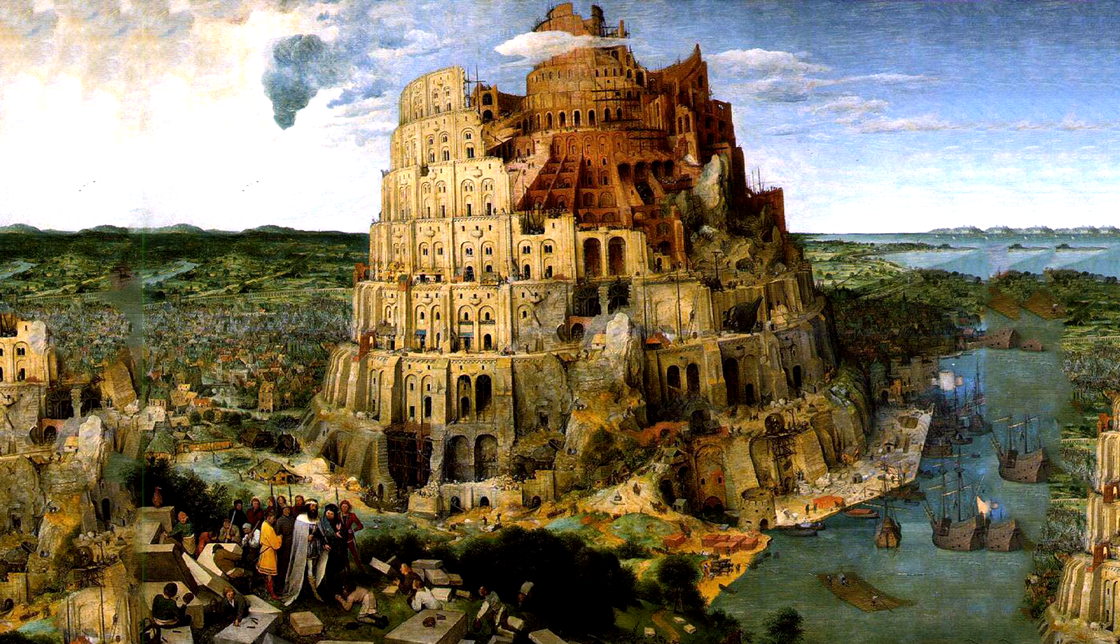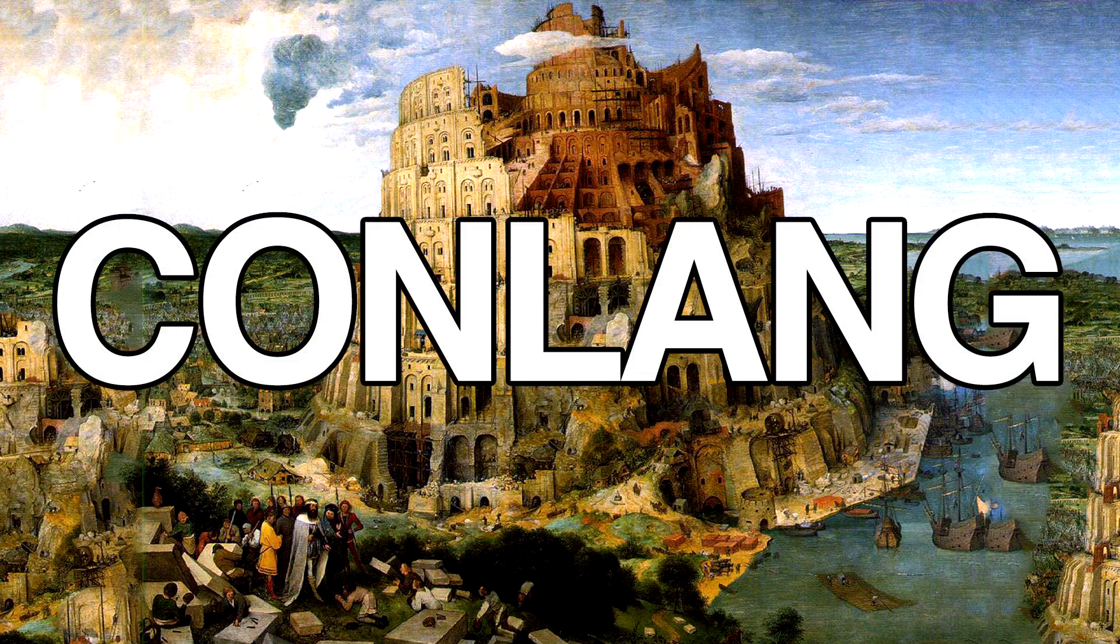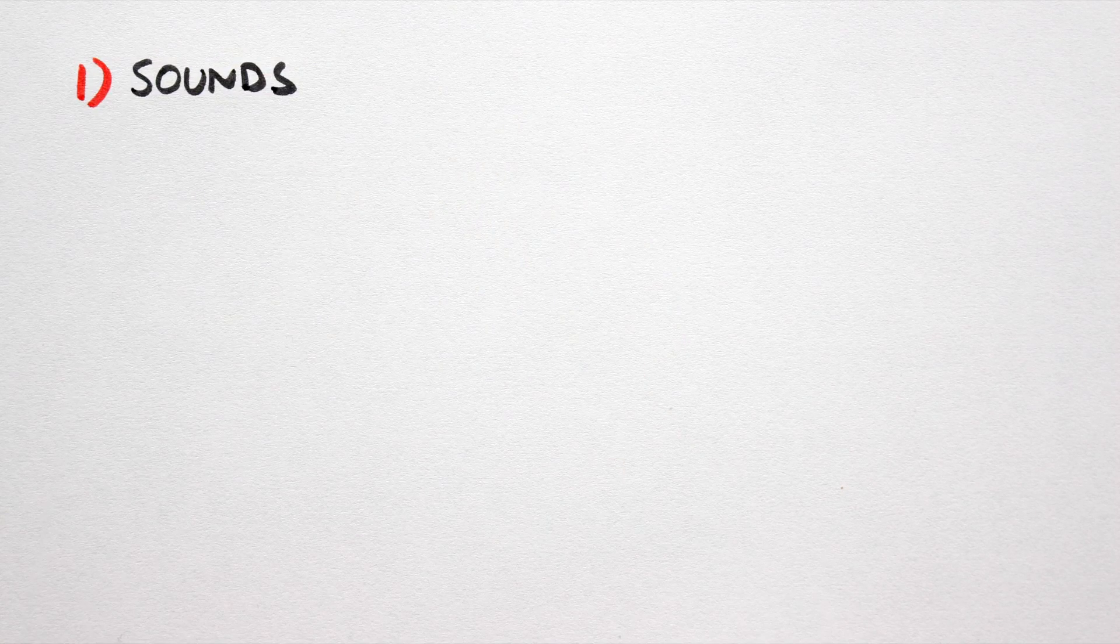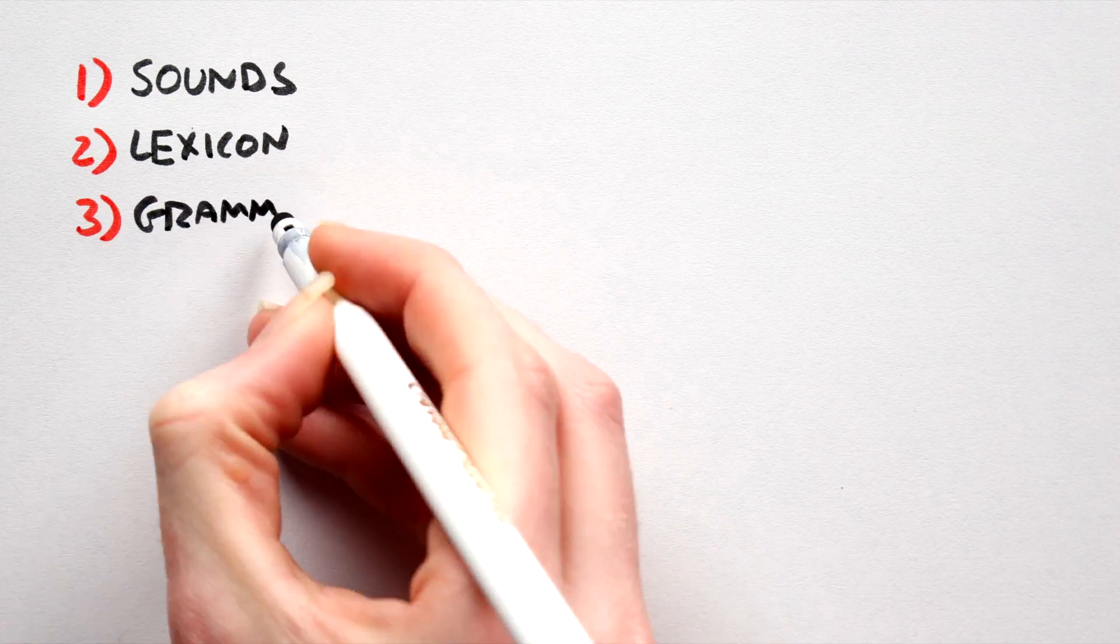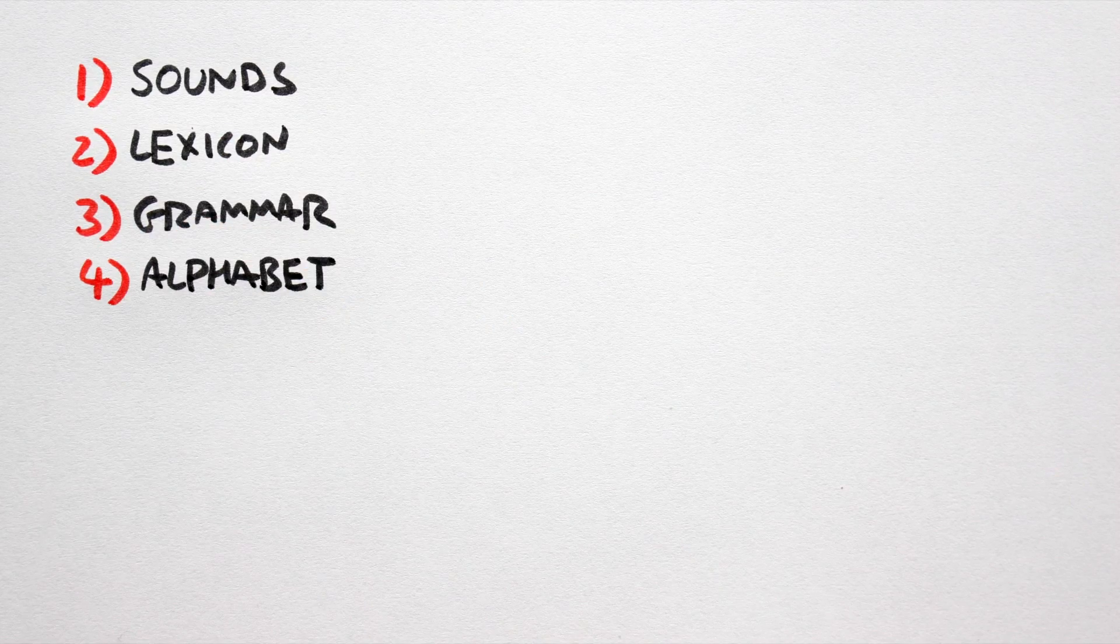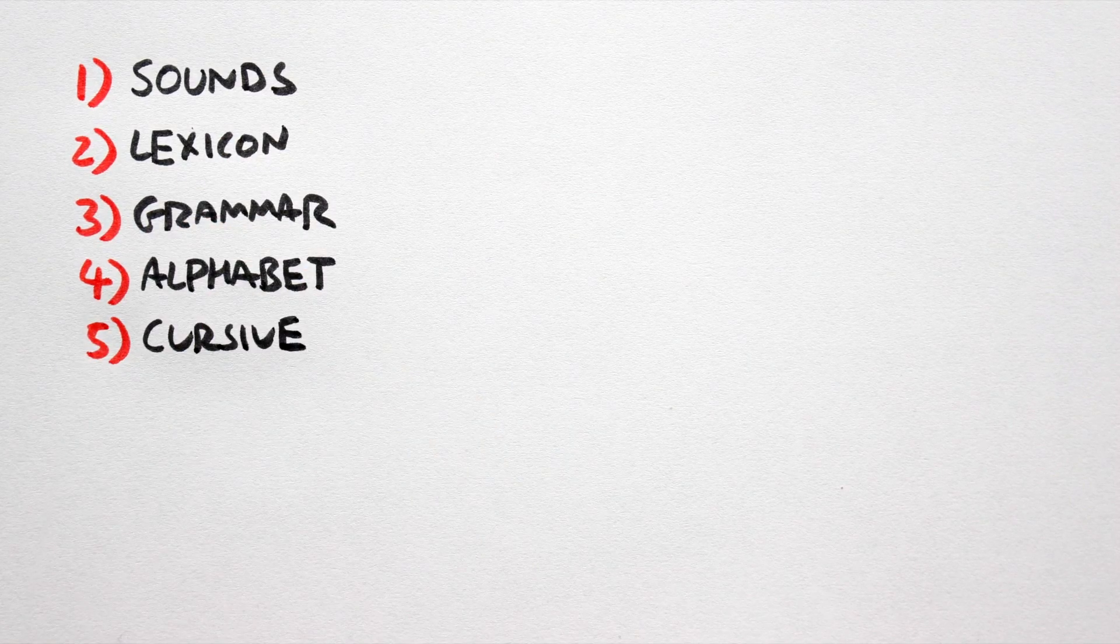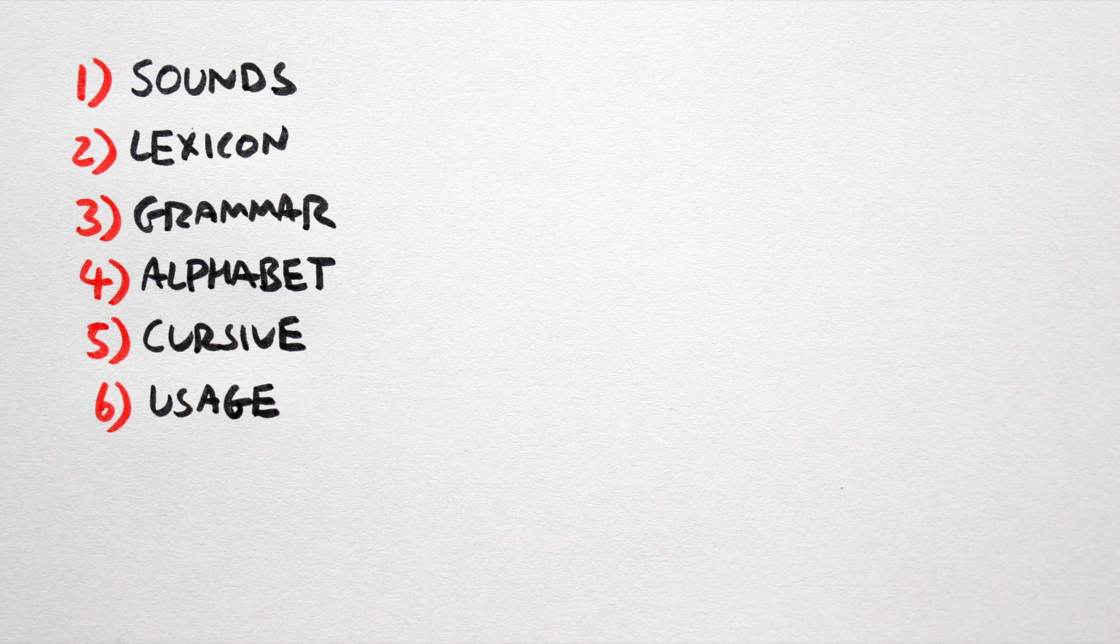There are, arguably, six steps one must go through in order to create a constructed language, or conlang for short. 1. Select the sounds your language uses. 2. Create a lexicon. 3. Create grammar. 4. Design an alphabet. 5. Modify it for handwriting. 6. Begin writing and translating text in your language.